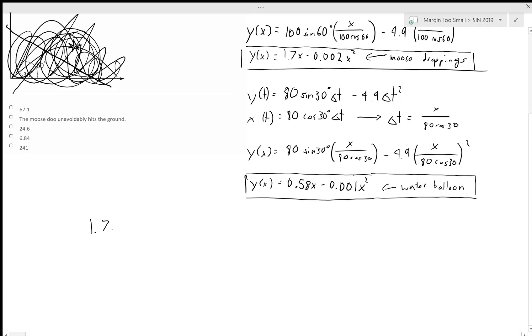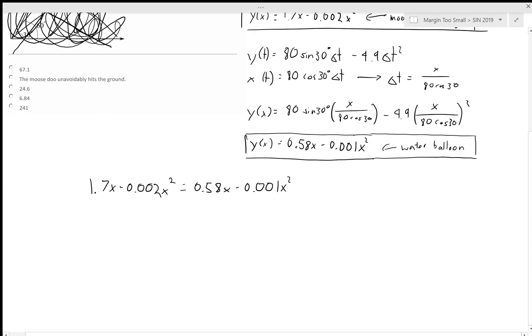We can set these equal to each other. 1.7x minus 0.002x squared equals 0.58x minus 0.001x squared. We can simplify this by moving everything to the right side so that we get 0.001x squared minus 1.32x equals 0.